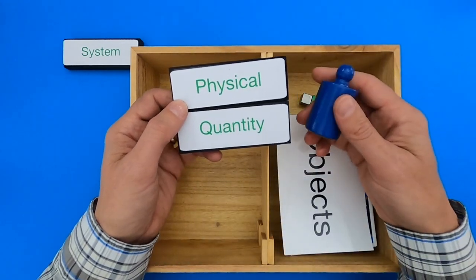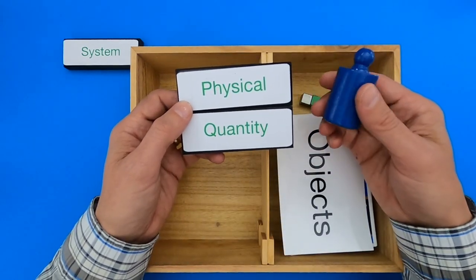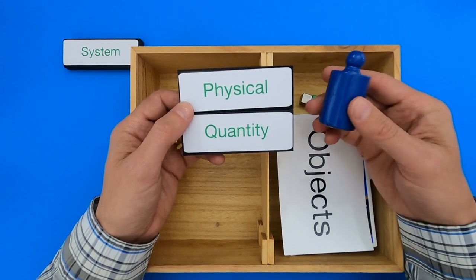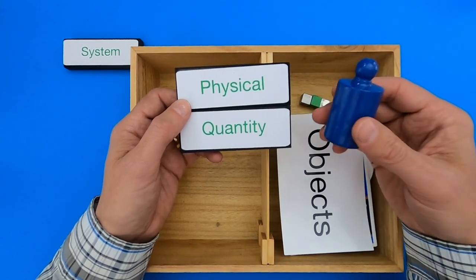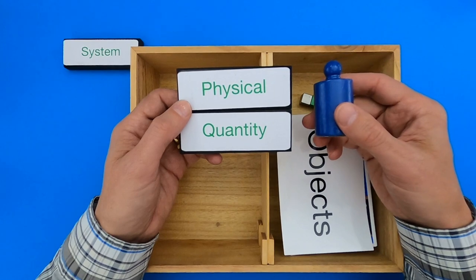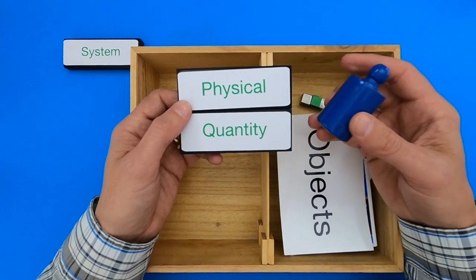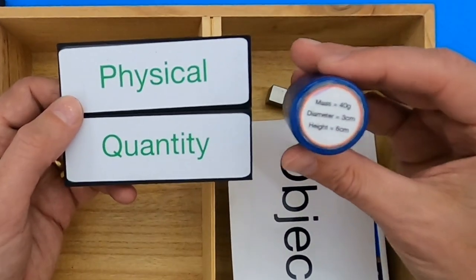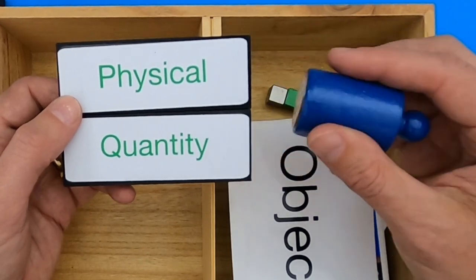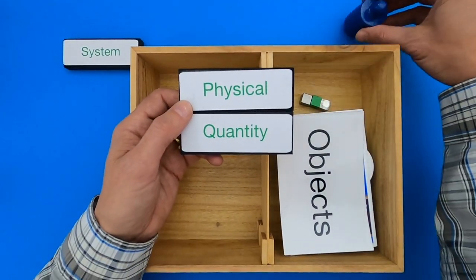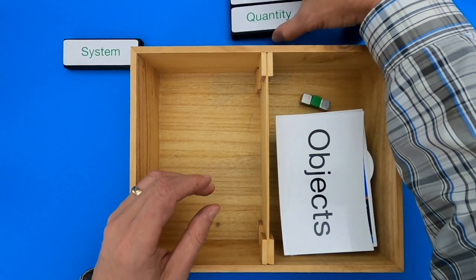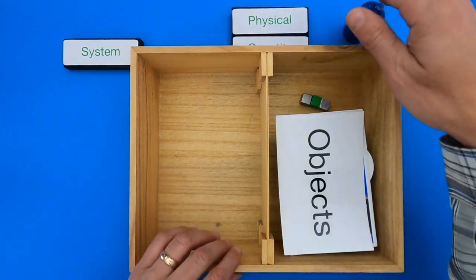And so the object that I use to really talk about quantities is this, it's a weight that you would put on a scale. So I could say, well there's a quantity of one of these, but that's not really a physical quantity. A physical quantity would be what's written on the bottom. It's like its mass, its height, it could be its density, and so those are going to be physical quantities. They're really properties of an object.